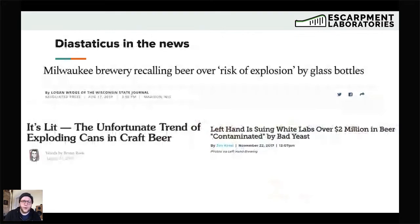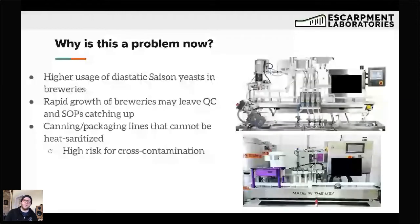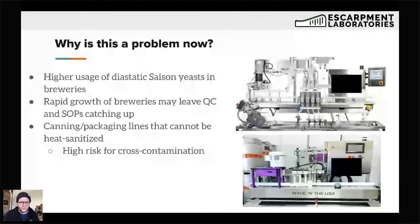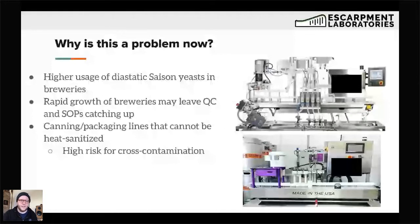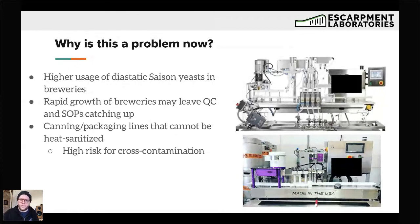This has been in the news. There have been documented cases where diastatic yeast causing exploding packages or other issues has become public — and I can tell you many have remained private as well. There have been public cases of beers recalled and lawsuits as a result of diastatic yeast presence. So why is this a problem now? Why have we only been talking about diastaticus for the last three years? Part of this is a higher usage of diastatic Saison yeast in breweries — about four years ago, Saison really started becoming a more popular style.